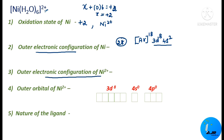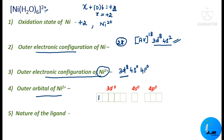We are now going to write the outer electronic configuration of Ni²⁺. When we get Ni²⁺, the 2 electrons of 4s² are removed, giving us a configuration of 3d⁸4s⁰ and 4p⁰. Based on Hund's rule of maximum multiplicity, electrons occupy orbitals singly first, then begin to pair up. With 8 electrons in 3d, we fill 5 singly then pair the 6th, 7th, and 8th. This results in 2 unpaired electrons in the outer orbital of Ni²⁺.